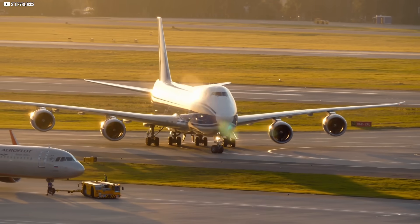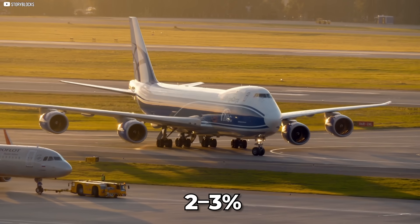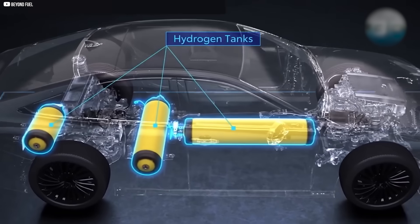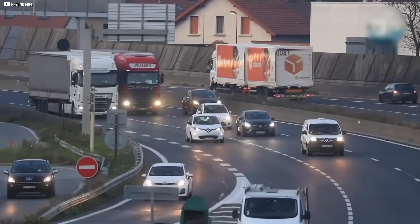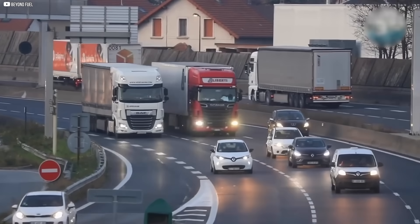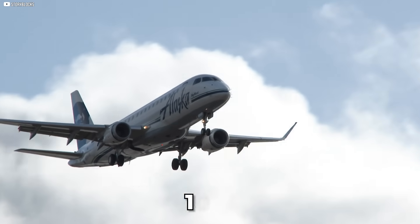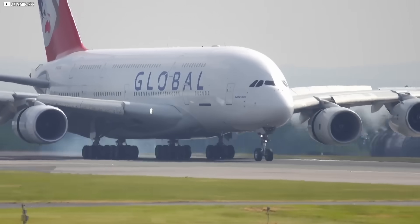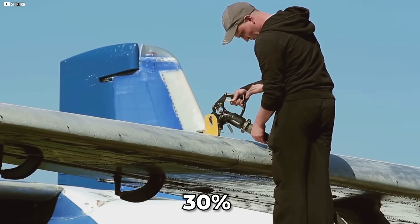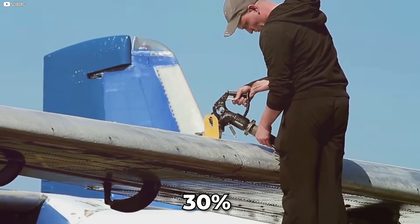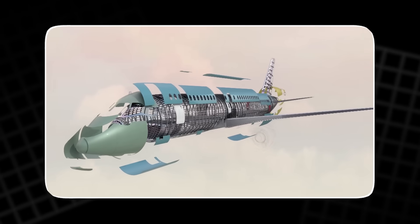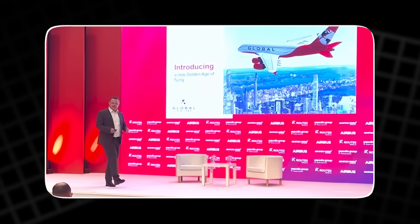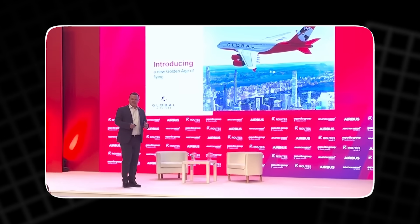Estimates vary, but aviation is responsible for roughly 2 to 3 percent of global carbon emissions. That number might seem small, but in the transport sector alone, air travel accounts for about 10 percent of emissions and is growing. Worse, airlines spend around 30 percent of their total operating costs on fuel. That makes finding a cheaper, cleaner alternative a matter of both environmental and economic survival.